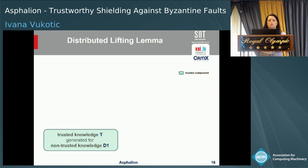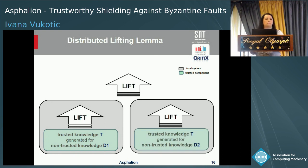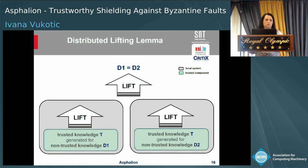This brings us to one of our main contributions: the distributed lifting lemma. If some trusted piece of knowledge T was generated for some non-trusted piece of knowledge D1, thanks to our framework we can lift the knowledge obtained from the trusted component to the level of the local system and further to the level of the distributed system. If two replicas both produce trusted knowledge T generated for two different non-trusted pieces D1 and D2, then at the distributed system level we know these two pieces of non-trusted knowledge must be the same.